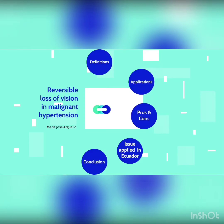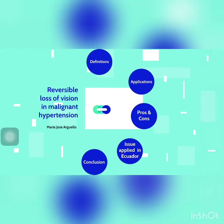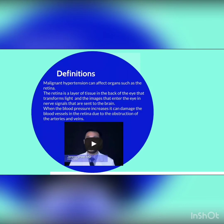Laws of vision in malignant hypertension: definitions. Malignant hypertension can affect organs such as the retina. The retina is a layer of tissue in the back of the eye that transforms light and the images entering the eye into nerve signals sent to the brain. When blood pressure increases, it can damage the blood vessels in the retina due to obstruction of the arteries and veins.